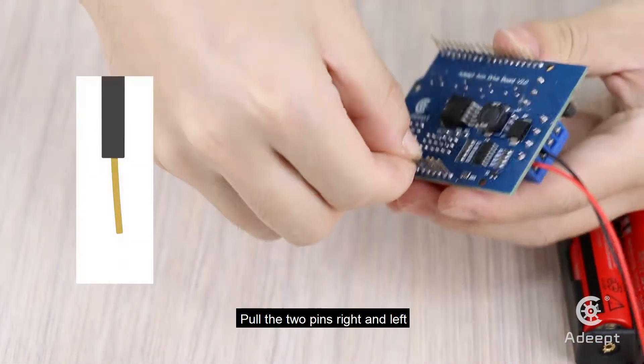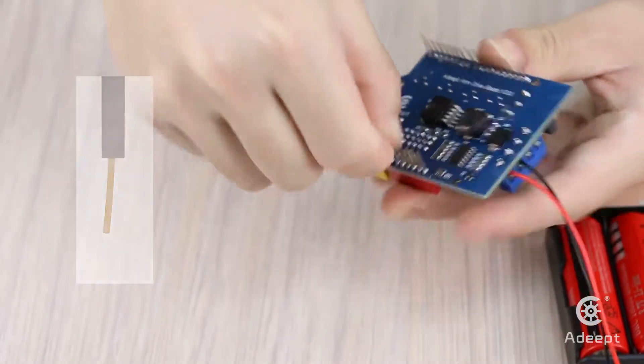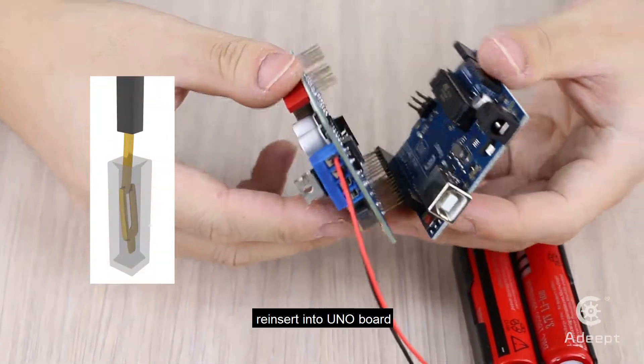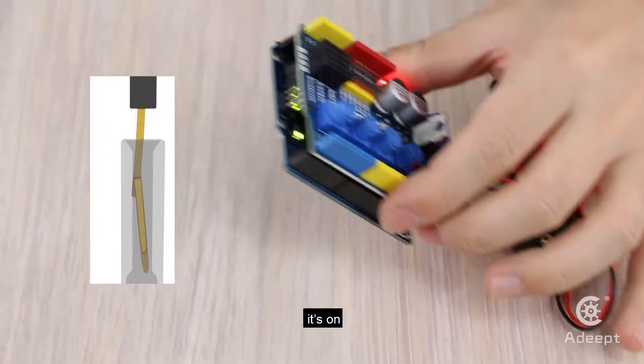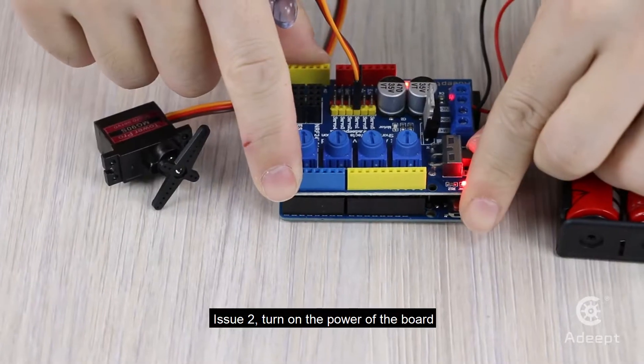Pull the two pins right and left, insert into the UNO board, and turn on the power.